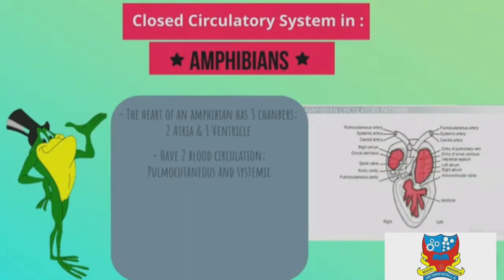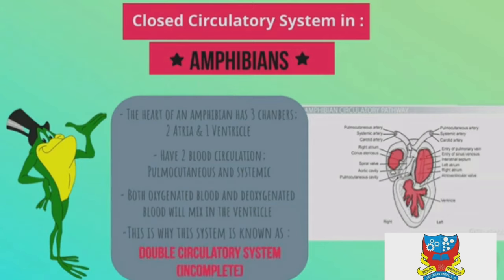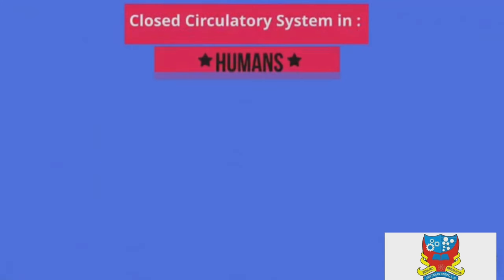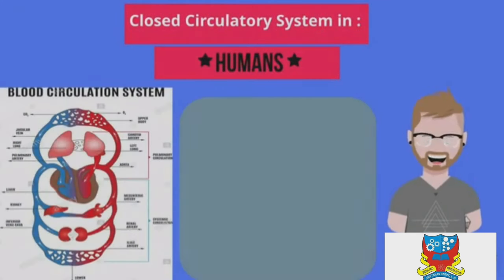In amphibians, the heart has three chambers: two atria and one ventricle. They have two blood circulatory systems — the pulmonary cutaneous and the systemic system. Both oxygenated and deoxygenated blood mix in the ventricle, which is why this system is known as the double circulatory system.